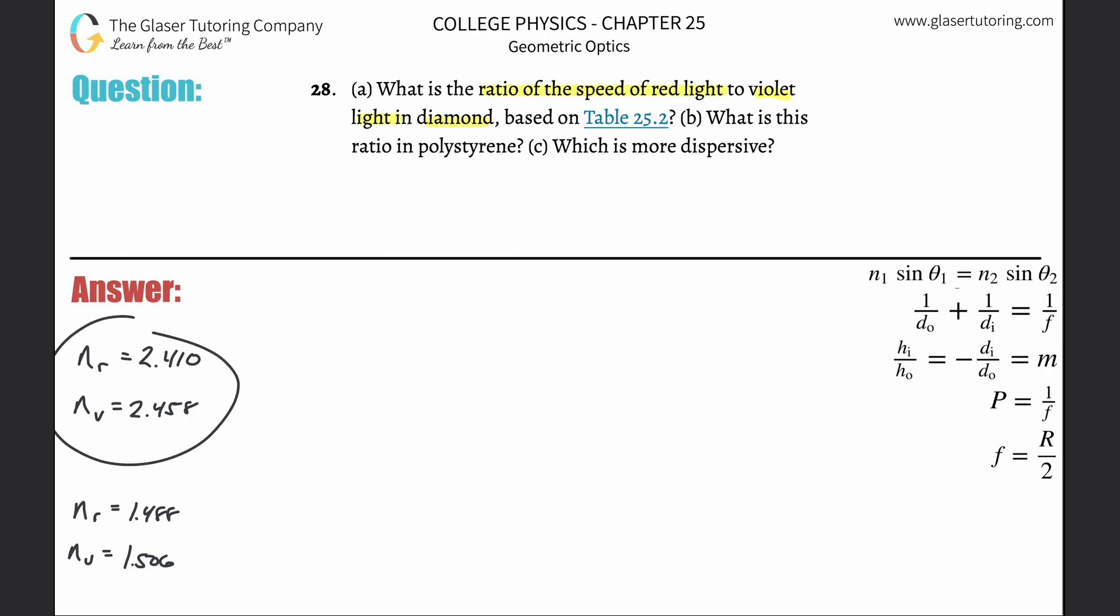So these are some of the values. They give us the index of refraction for red light in diamond, and here's the index of refraction for violet light in diamond. So what we're asked to find is the ratio of the speed of red light to the speed of violet light in diamond.